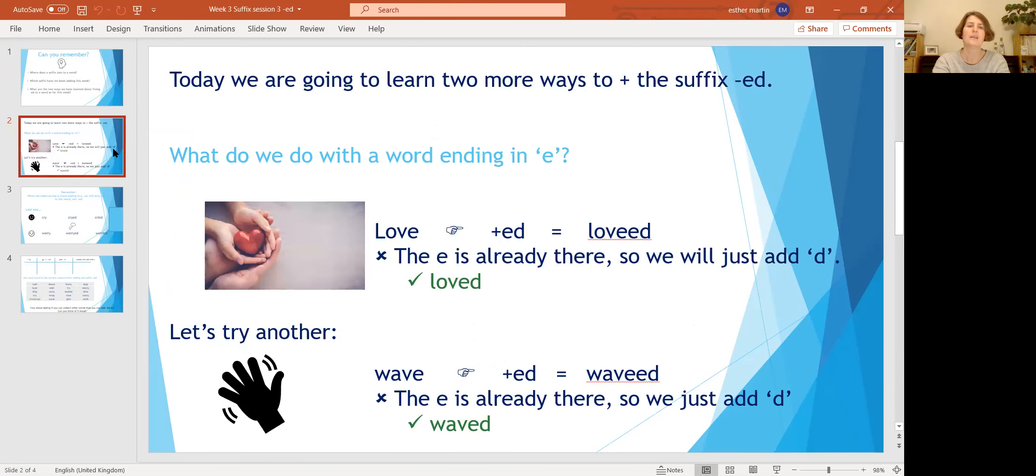So let's have a look. There we go. So this time we're going to look at a word ending in 'e'. I've got the word love written down here, and if I just add -ed to the end, I'm going to have this word which looks like 'lovied'. Doesn't look right, does it? That doesn't say 'loved'. So the 'e' was already there at the end of the word love, and so we're just going to add 'd'. We don't need to add -ed, we're just going to add 'd'.